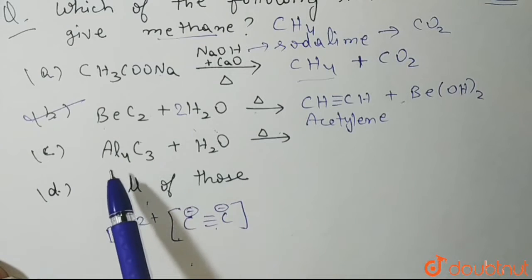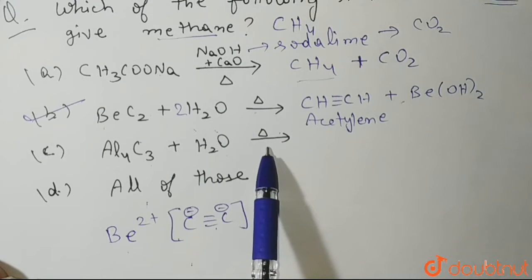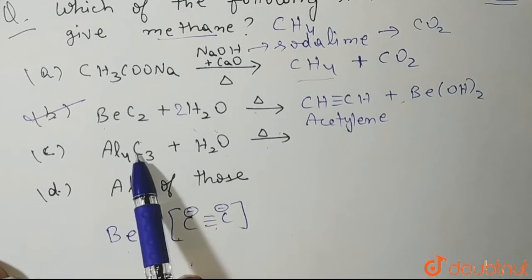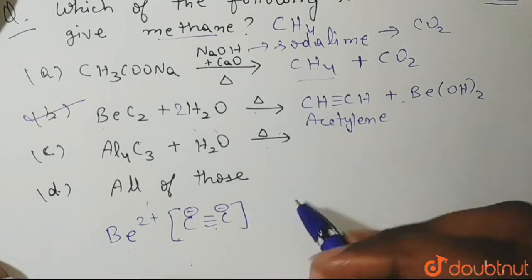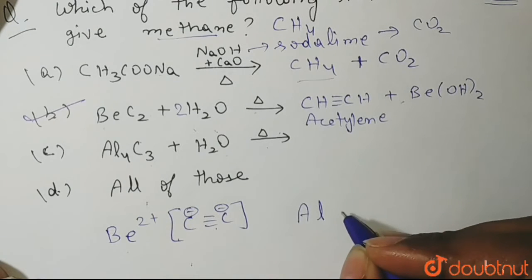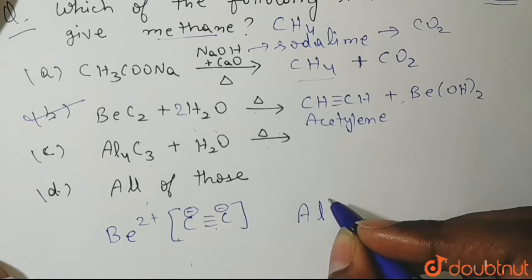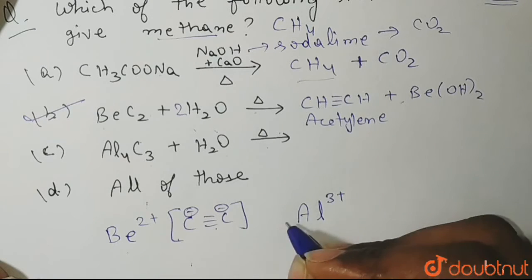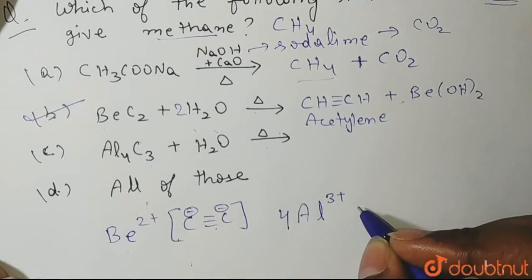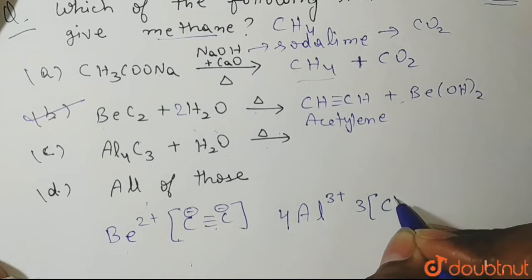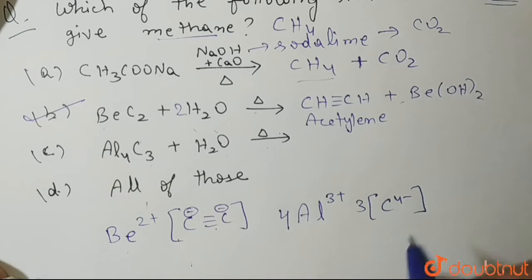Now let's see other options as well. AL4C3 plus water and then you heat it. AL4C3 here is nothing but aluminum carbide and its structure is 4 AL3 plus and 3 C4 minus. So this is aluminum carbide.